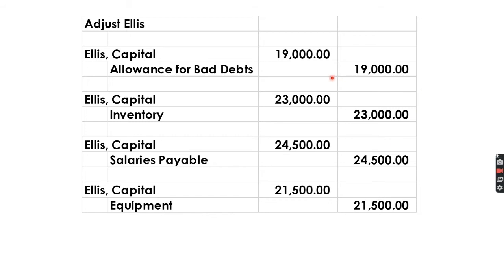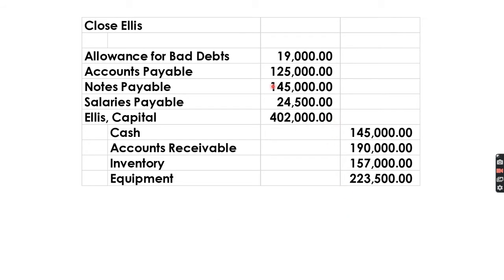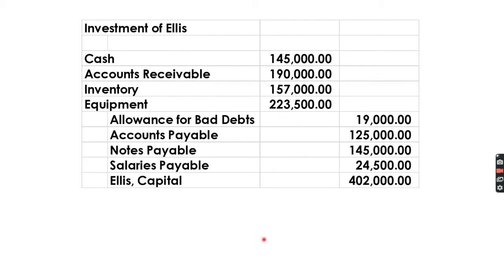For Ellis, we recognize allowance for bad debts, decrease in inventory, recognition of salaries payable, and decrease in equipment value. After closing entries in Ellis's books, the adjusted capital is 402,000, which is then invested in the partnership books. The adjusted capital for Ellis prior to the bonus method is 402,000.